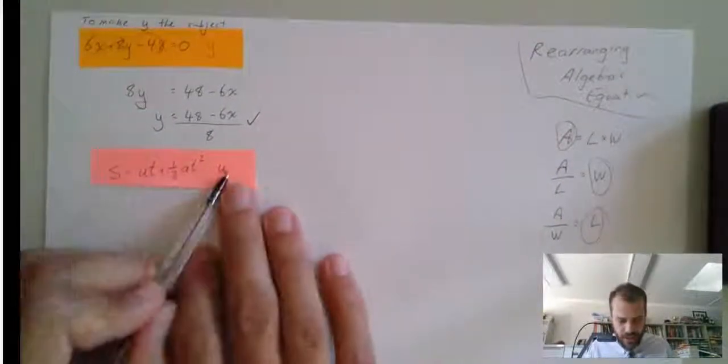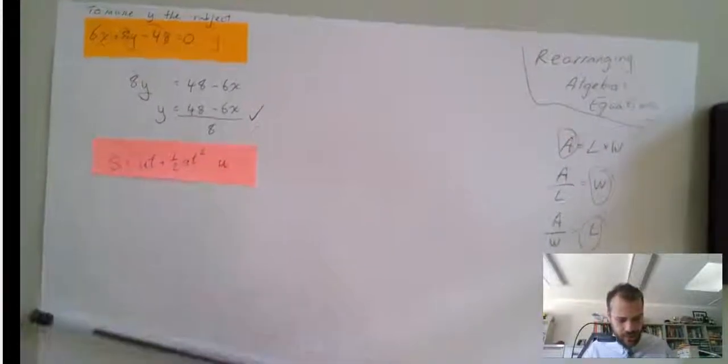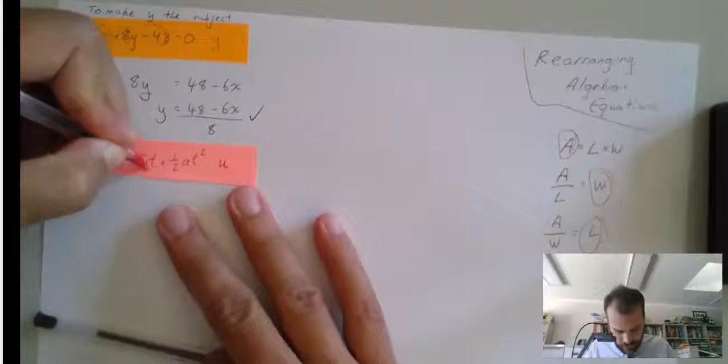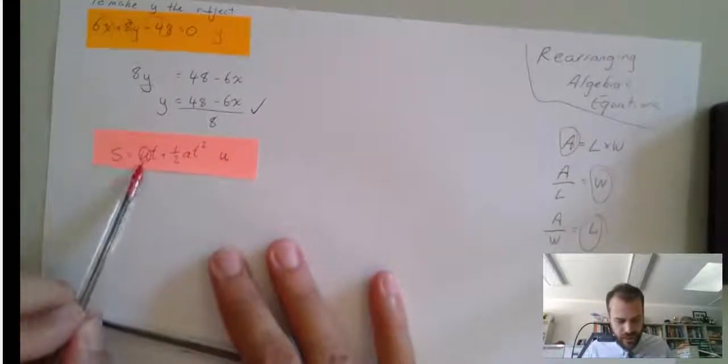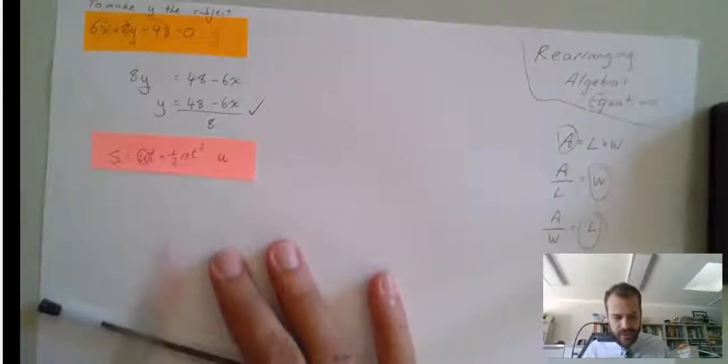This question says, make u the subject. So, if I look at this question, here's u. And we have s equals u times t plus 1 half at squared.